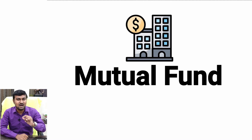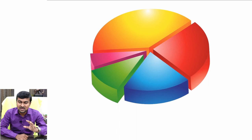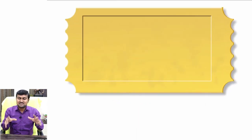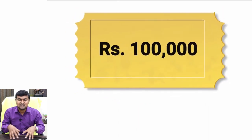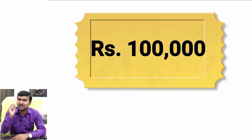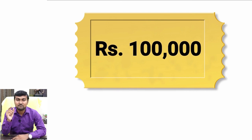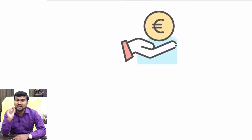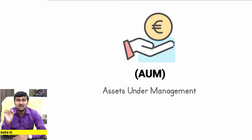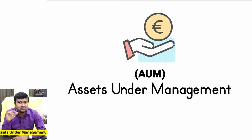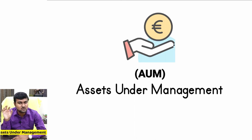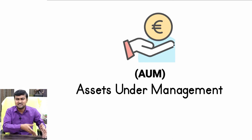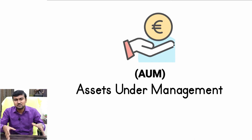Each investor with 1000 rupees is a unit holder. With 100 persons each putting 1000 rupees, the entire amount comes to 1 lakh rupees. That 1 lakh is called AUM — Asset Under Management. In every mutual fund you will find this term AUM, which is nothing but the total pooled investment amount.